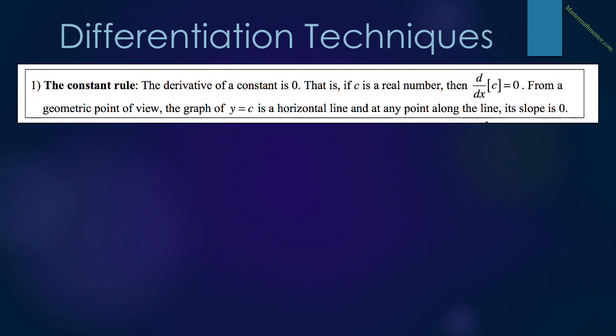Our first rule is called the constant rule. It says that the derivative of a constant is zero. This means if c is a real number, the derivative of c with respect to x equals zero. This makes sense from a geometric point of view: the graph of y equals c is a horizontal line, and at any point along that line, its slope must be zero.